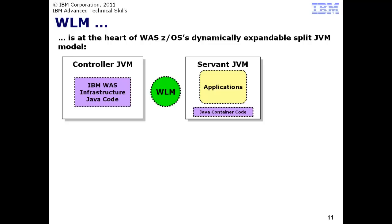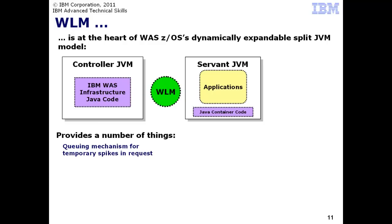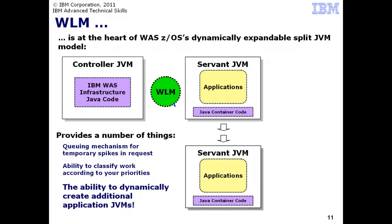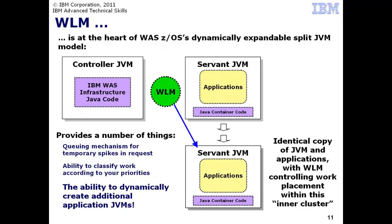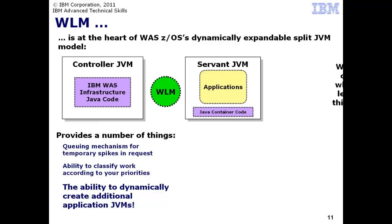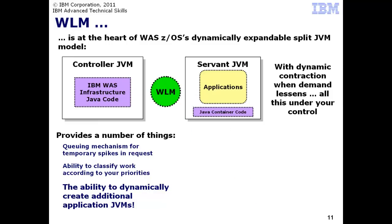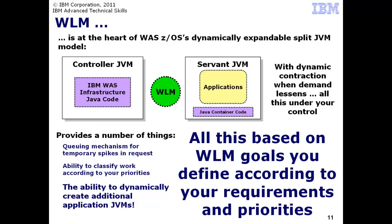WLM sits in the middle and acts as an intermediary between the controller and the servant. This provides a number of benefits, such as a queuing mechanism used to hold short-term spikes in requests, the ability to classify work based on priority, and the ability to dynamically expand capacity by starting additional servant regions based on WLM goals. Each JVM is a copy of the original, with WLM acting to serve work to each servant and keep track of affinities and classifications. WLM may then dynamically contract the environment based on its view of defined goals and other system activities.